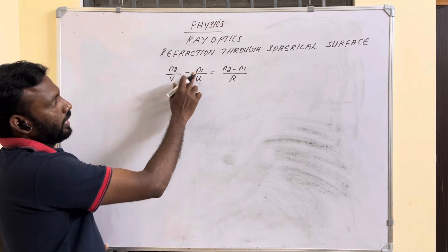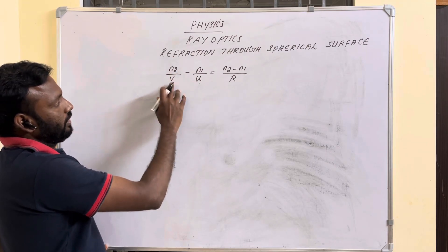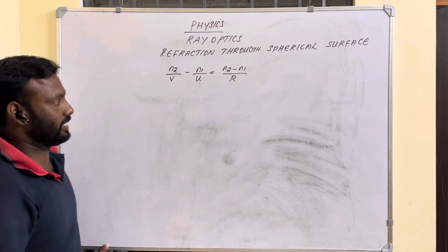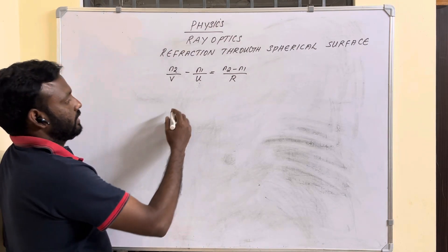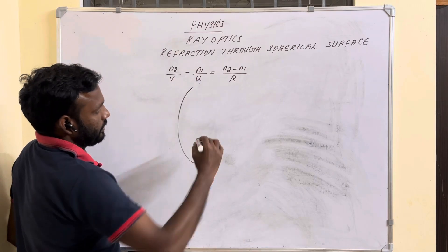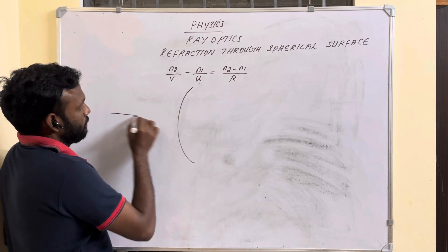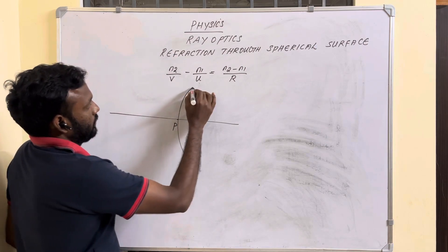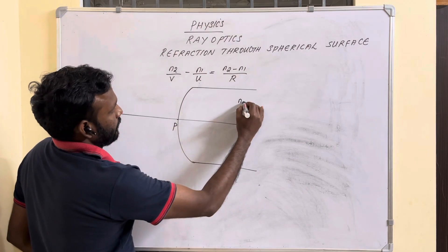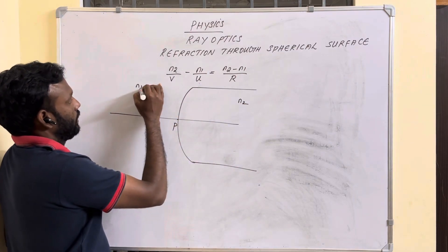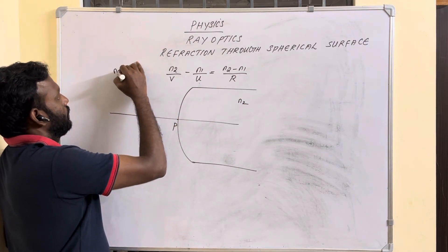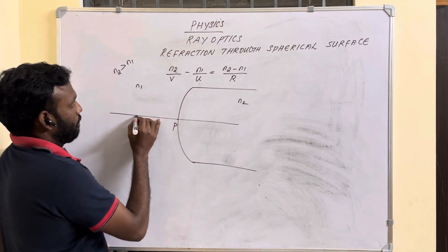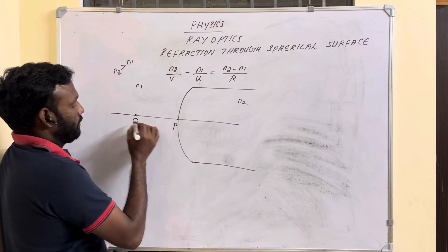Here n1 and n2 are the refractive indices of the two media, v is image distance, u is object distance, and r is radius of curvature. Let's consider a convex spherical surface on the principal axis, with medium n2 on one side and medium n1 on the other, such that n2 is greater than n1.